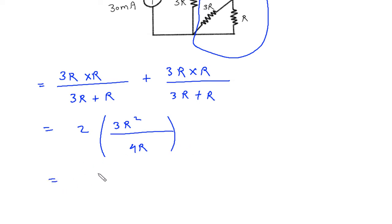Now, this will be twice of 3R square by 4R. This will be 6R, and this R will get cancelled.